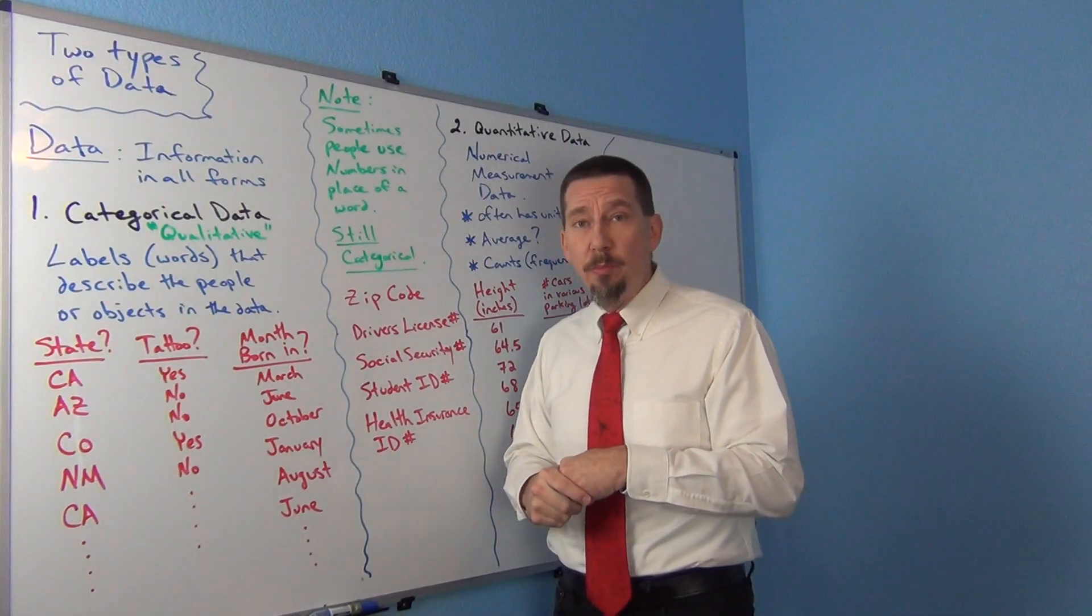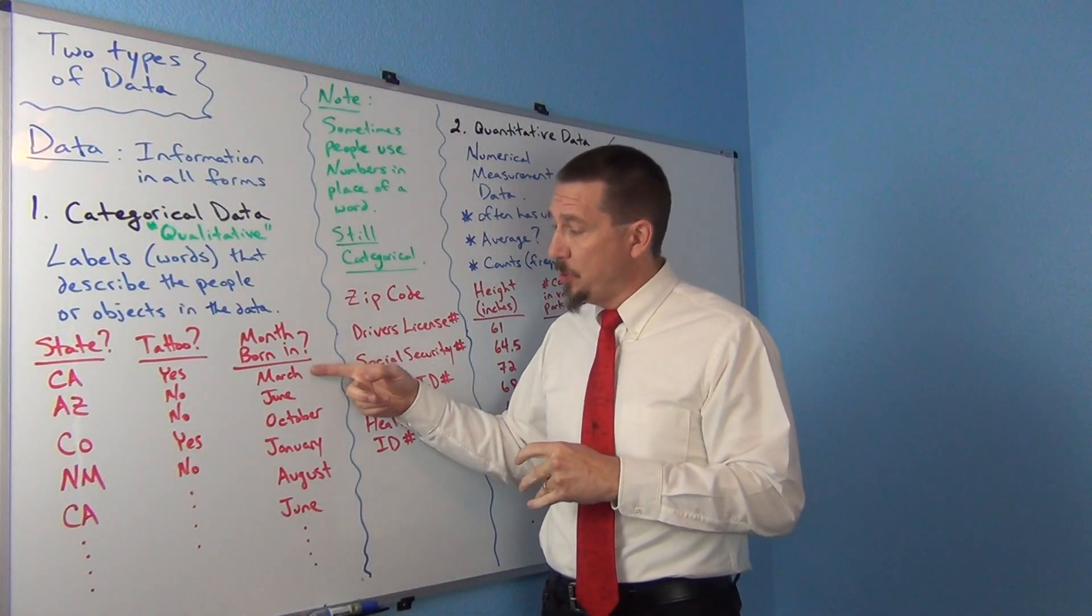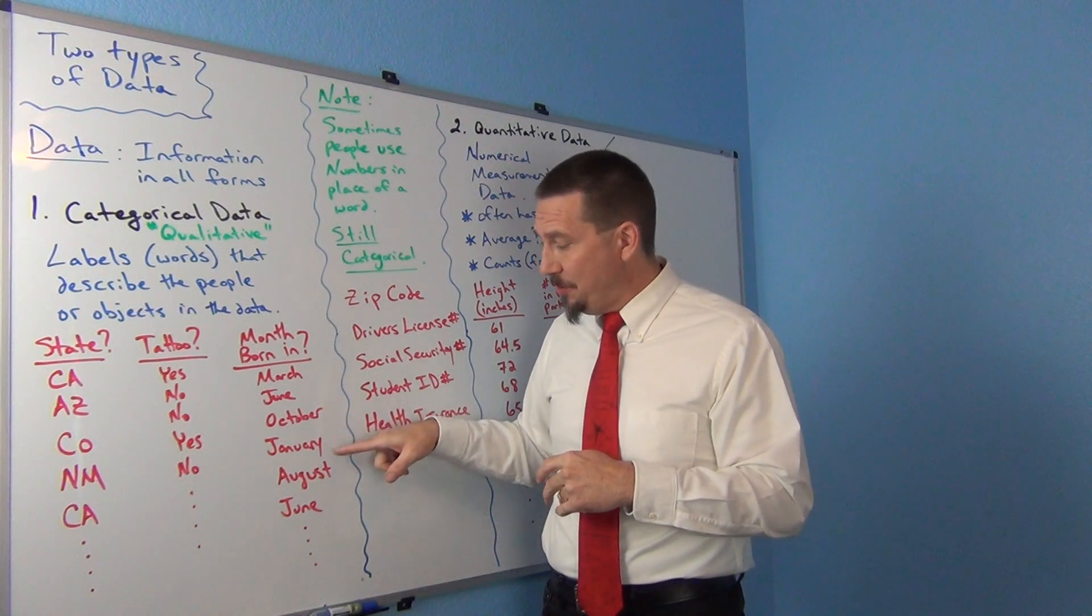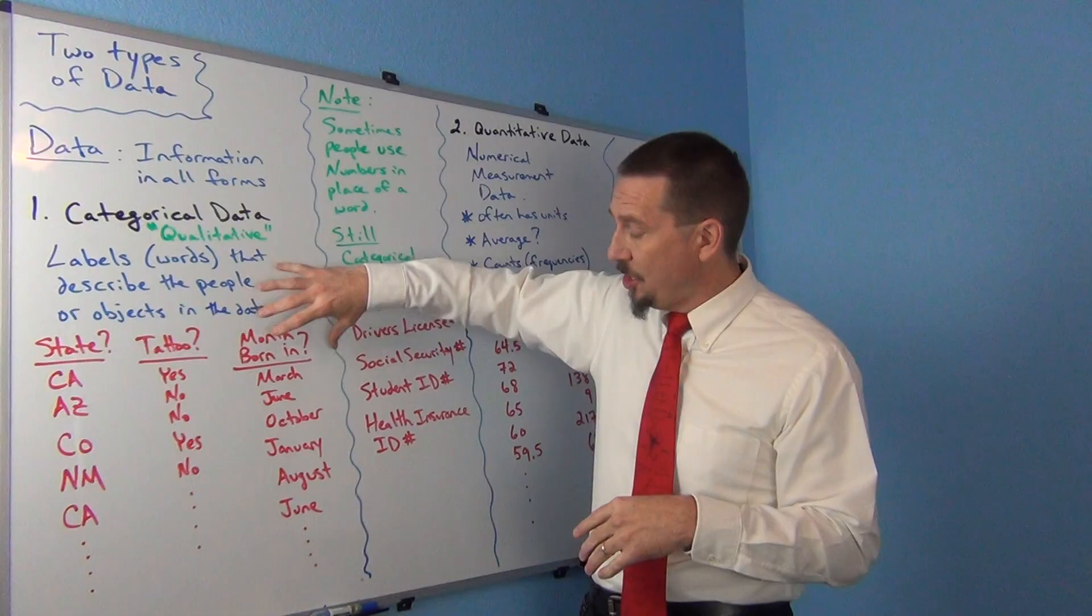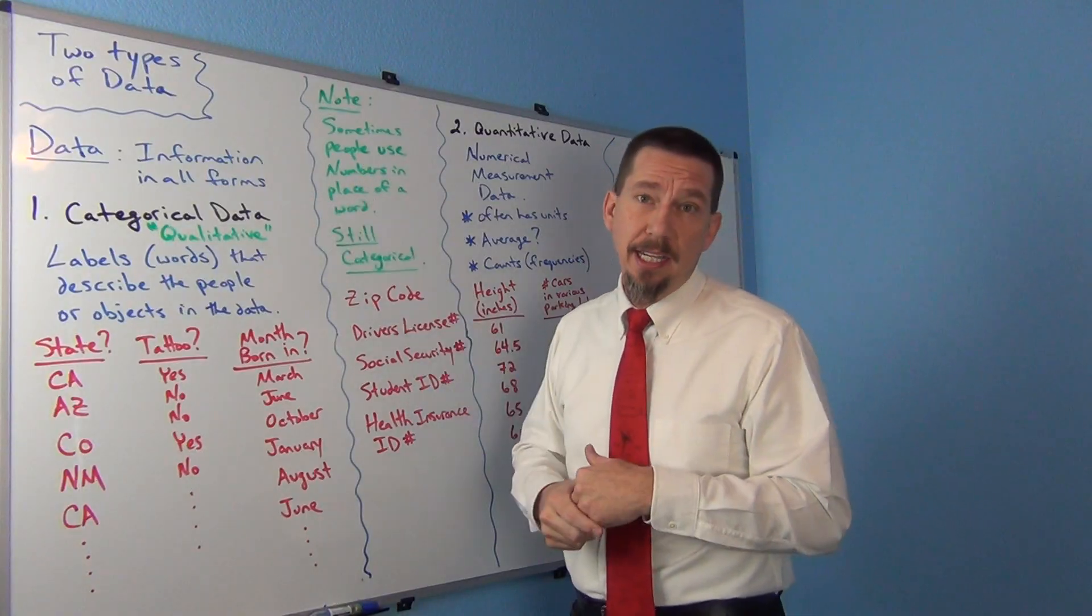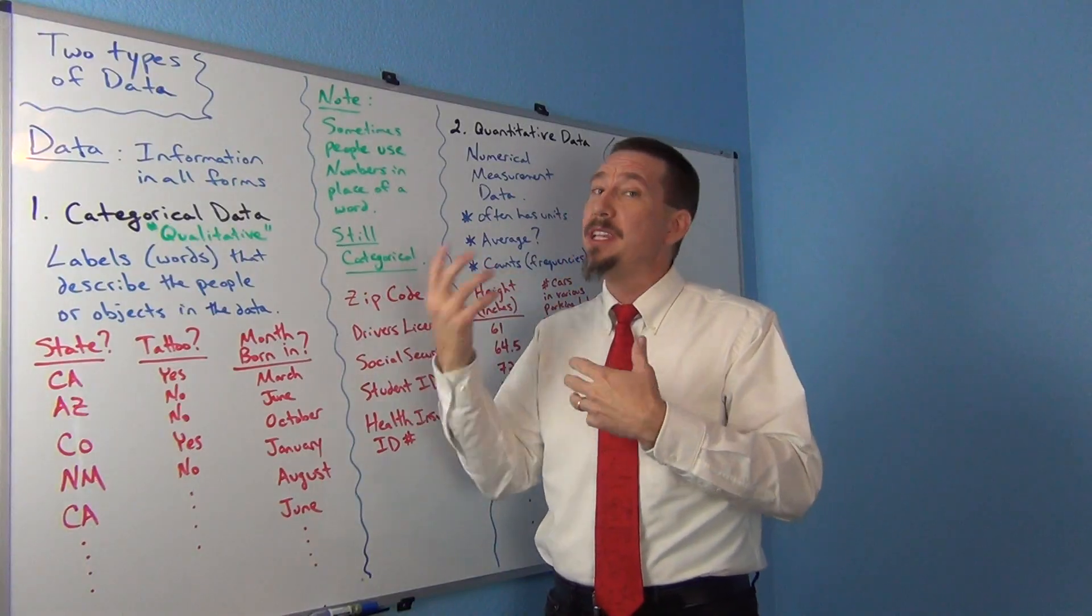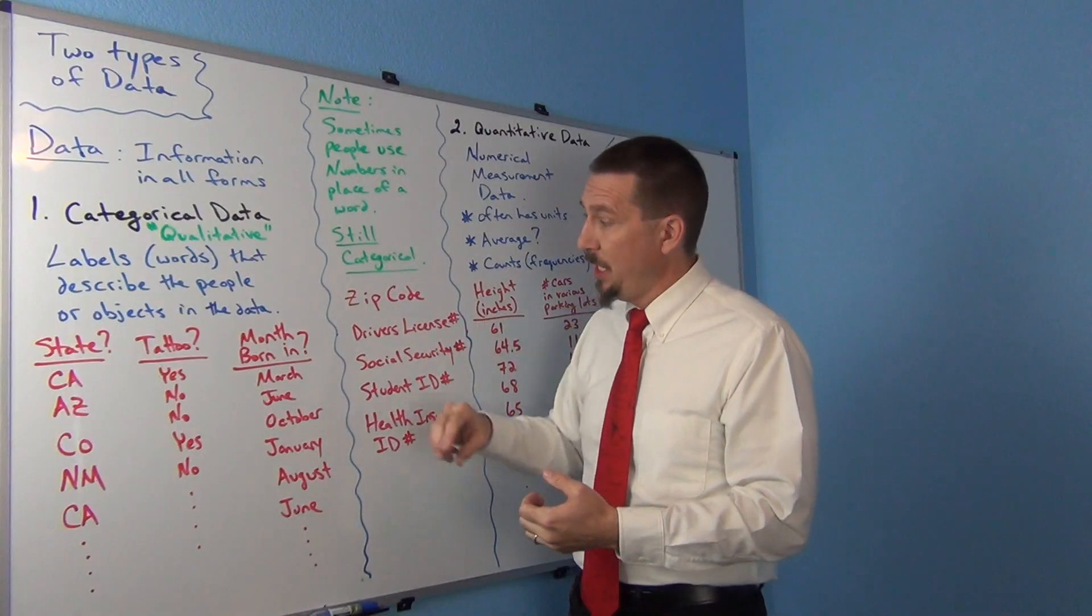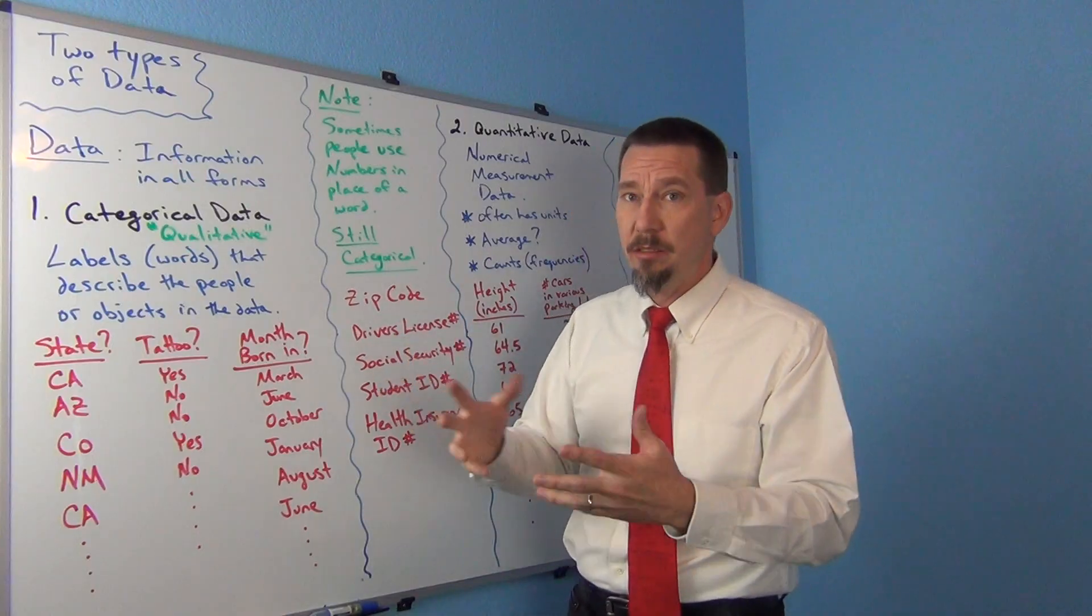I could ask people, what month are you born in? Were you born in March? This person was born in March. This person was born in June. Another person was born in October, January, August, June, and so on. So notice again, the data set, the column of data looks like a bunch of words. And that's how you know you're dealing with categorical data.